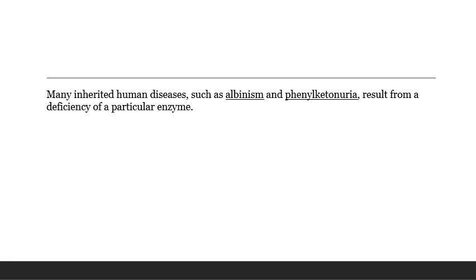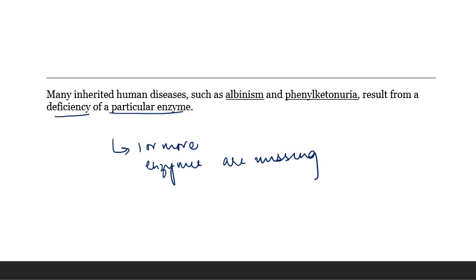There are many human diseases related to the deficiency of a particular enzyme. If one or more enzymes are missing, it may cause certain diseases. Two such diseases are albinism and phenylketonuria. In the case of albinism, there is absence of one enzyme, as a result of which skin melanin will not get produced, causing the person to lack skin tone color.